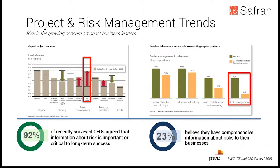Another study by AT Kearney was conducted twice over a three-year period, first in 2008 and again in 2011. They focused on risk profiling and level of concern. In 2008, concern about risk was one and a half out of five; by 2011 it had increased to four out of five. Additionally, 67% of senior management perceived themselves as involved in risk. A PWC study found 92% of CEOs said risk information was critical to long-term success.